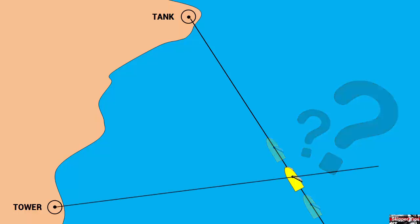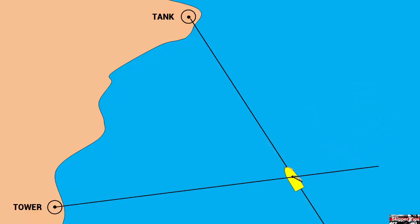Take a bearing to the second object and plot it onto the chart. The intersection of the first and second object represent your position.